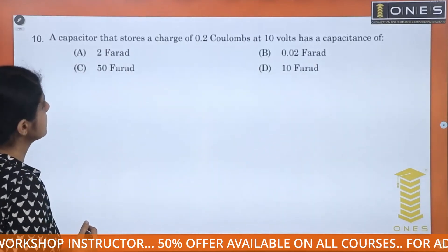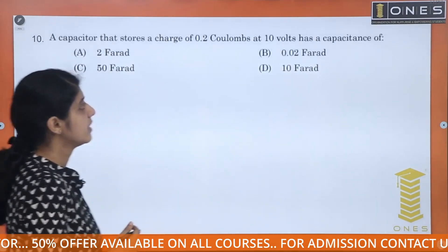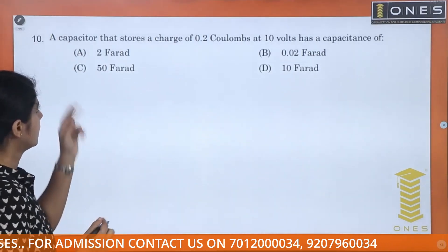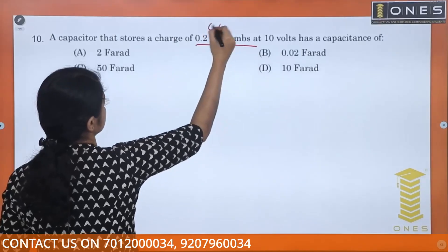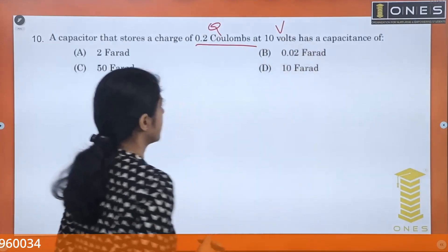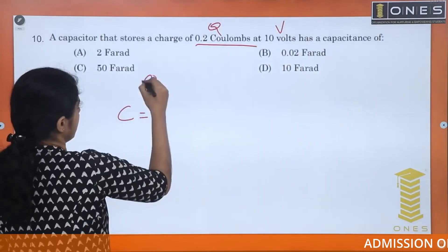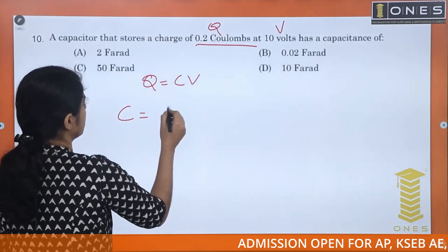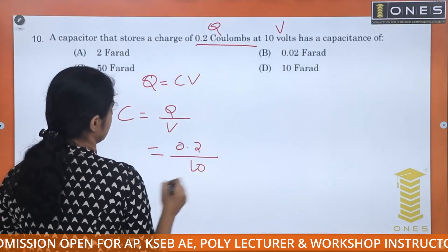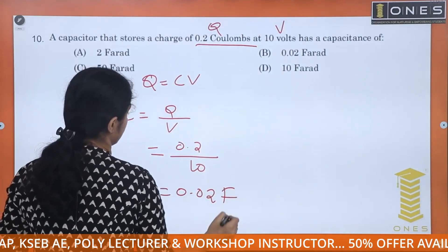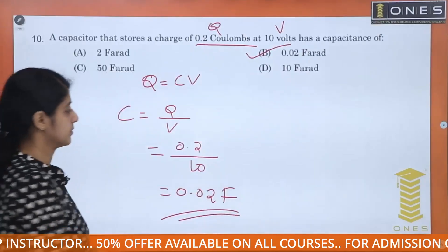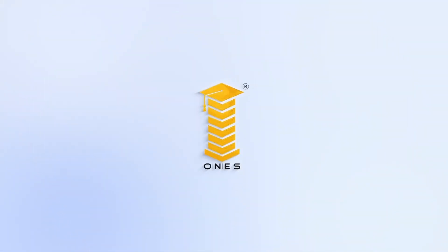Next question: A capacitor stores a charge of 0.2 coulombs at 10 volts. What is its capacitance? Using Q = CV, we get C = Q/V = 0.2 divided by 10 = 0.02 farads. So the capacitance value is 0.02 F, and option B is the answer.